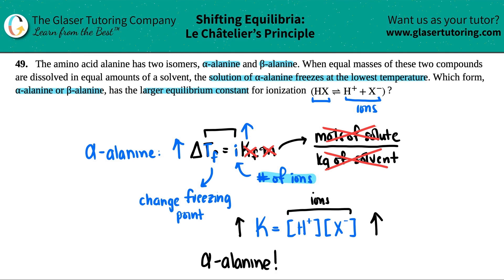Just to recap: they did say that alpha alanine had the lowest freezing temperature. That means the change from the standard had to be much more. Since this is in direct correlation with the i value, if this increases, the i increases, the number of ions increase. And if the number of ions increase for alpha alanine, that means K will increase because that's also in direct effect. That's how we came to alpha alanine and not the beta one.